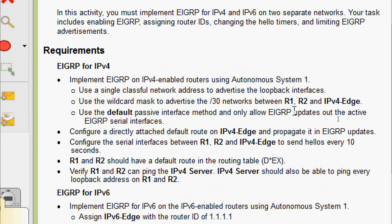Here we can see the requirements. EIGRP for IPv4: implement EIGRP on IPv4 enabled routers using autonomous system 1. Use a single classful network address to advertise the loopback interfaces. Use the wildcard mask to advertise the /30 networks between R1, R2, and IPv4 Edge. Use the default passive interface method and only allow EIGRP updates out the active EIGRP serial interfaces.